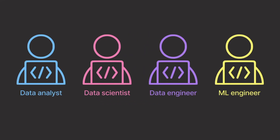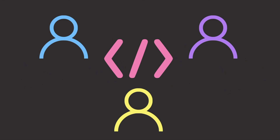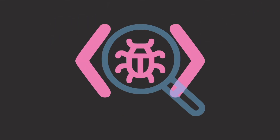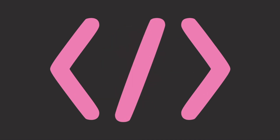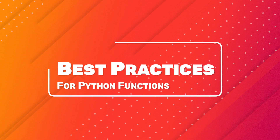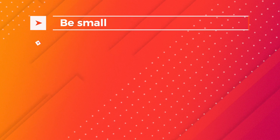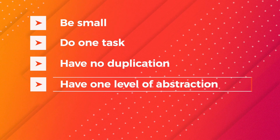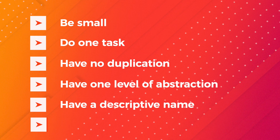For data scientists who work in a team with various roles, writing clean code is essential because clean code makes it easier for team members to understand the code base. Clean code simplifies tasks such as debugging and extending the existing code. To achieve maintainability, your Python function should be small, do one task, have no duplication, have one level of abstraction, have a descriptive name, and have fewer than four arguments.